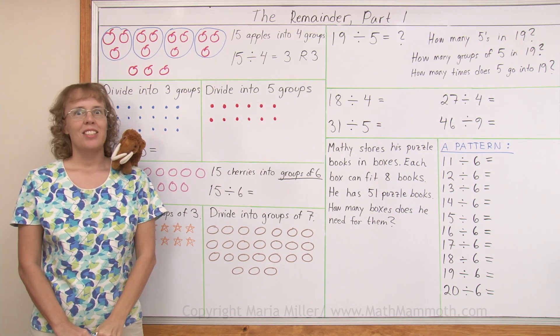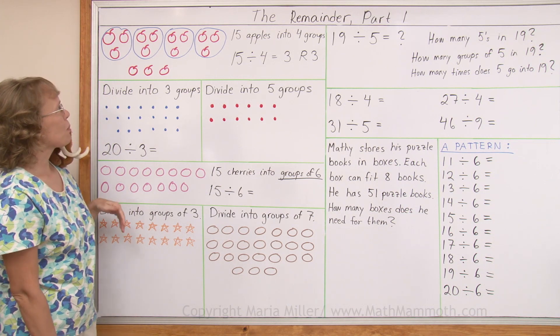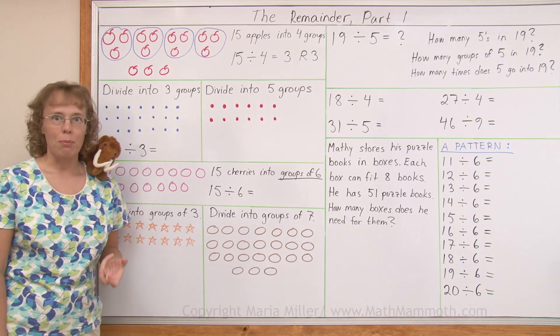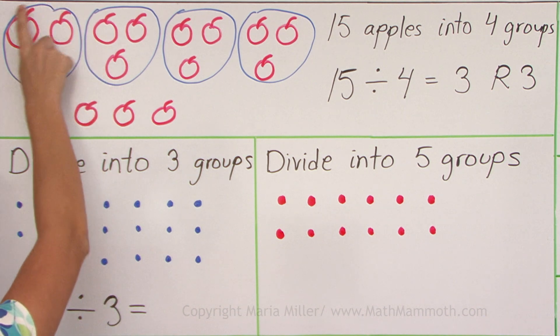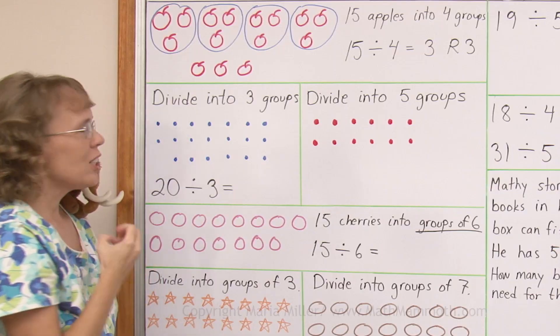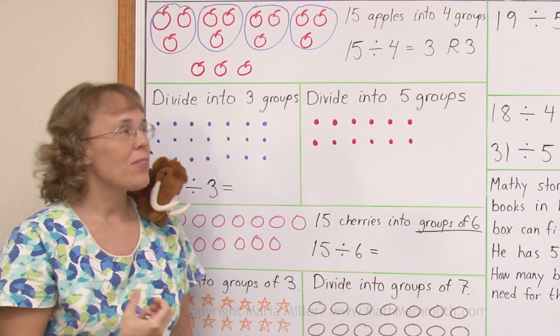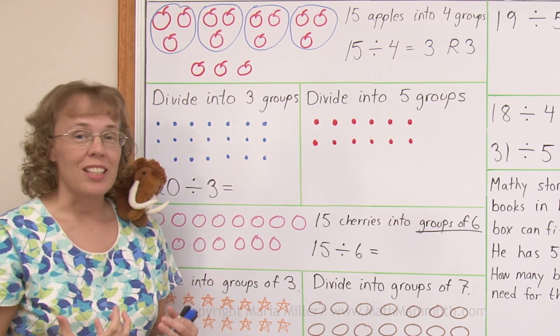In this lesson we are studying the remainder. I have an example division problem here. We have 15 apples and I have divided them into four groups. Imagine 15 apples being shared by four people as equally as they can. One person would get these apples, the second person these, and third person and fourth person. Each person gets three apples.